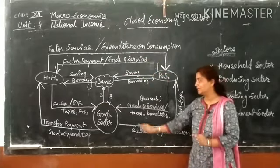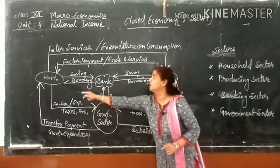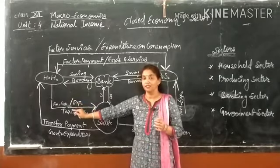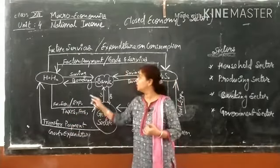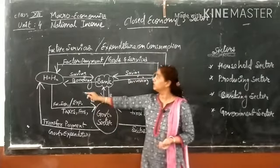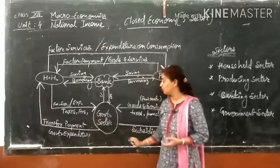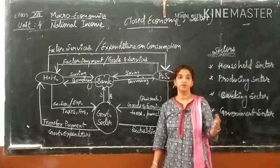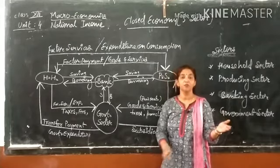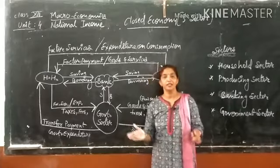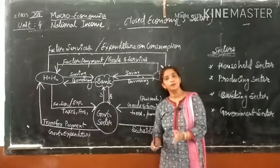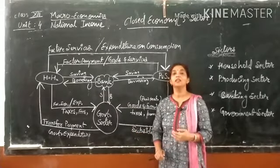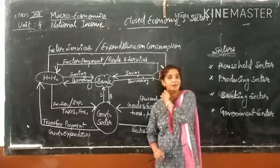The new element in closed economy is the government sector. Government sector is also dealing with household, producing, and banking sectors. Household sector not only provides its services and expenditure to the producing sector, but also provides factor services and other kinds of expenditure to the government sector. For example, if we visit a government hospital like AIIMS, a museum managed by the government, or pay toll tax, these represent payments going to the government sector.